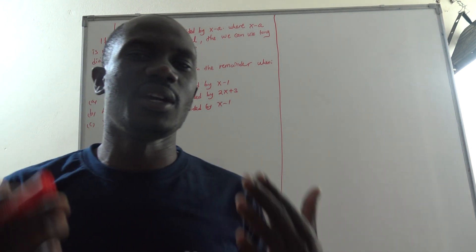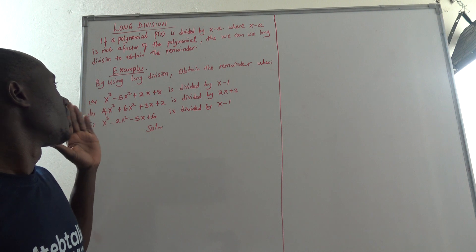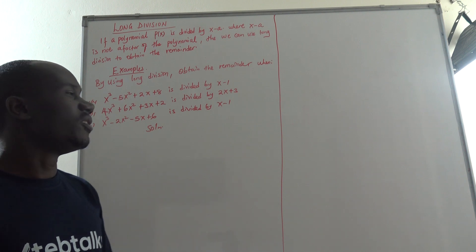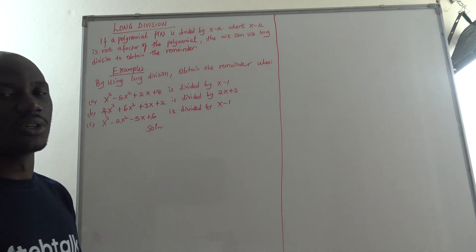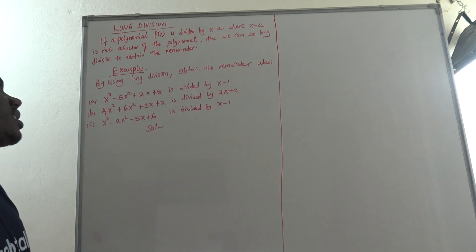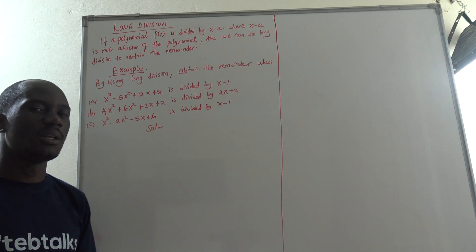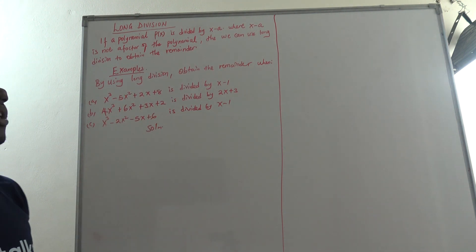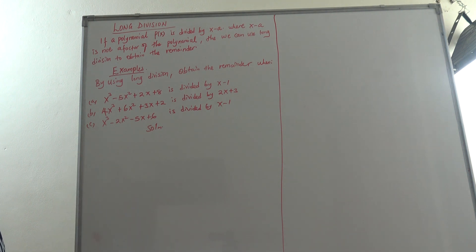This time we are going to look at how to get a remainder when we have not used the idea of polynomial equals quotient times divisor plus remainder. If we don't have that idea, what can we do? We can also use the idea of long division. It's another alternative. If a polynomial p(x) is divided by x minus a, where x minus a is not a factor of the polynomial, we can use long division to obtain the remainder.